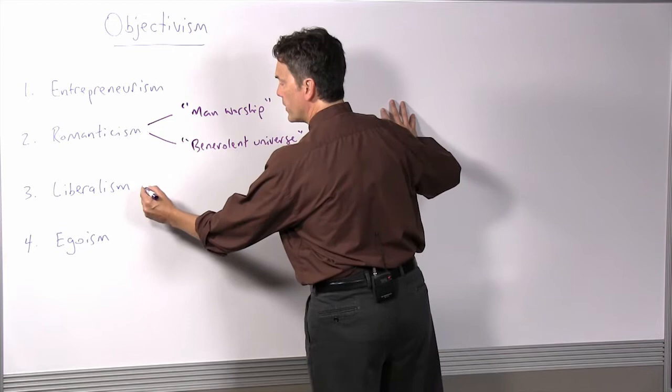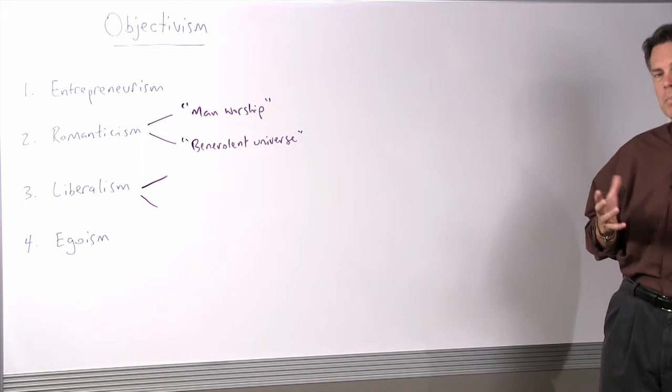Next, a couple of quick points about Rand's politics. Rand is broadly speaking a liberal, and liberalism as a broad political economic system has two components.